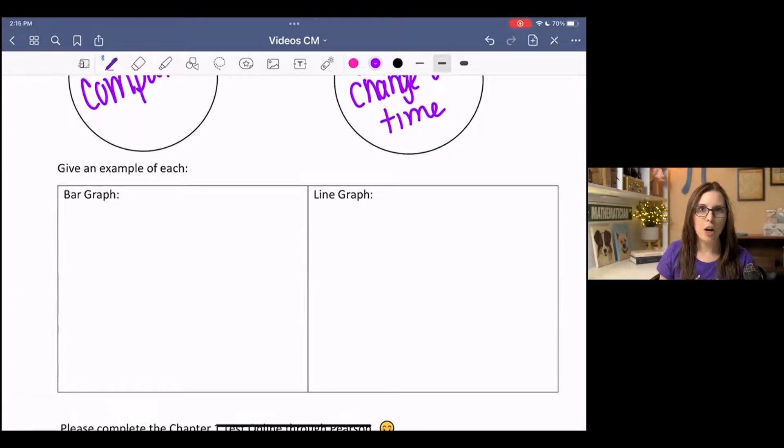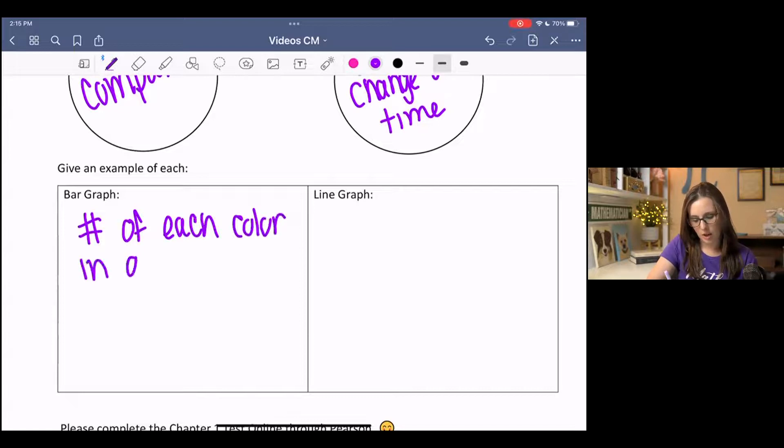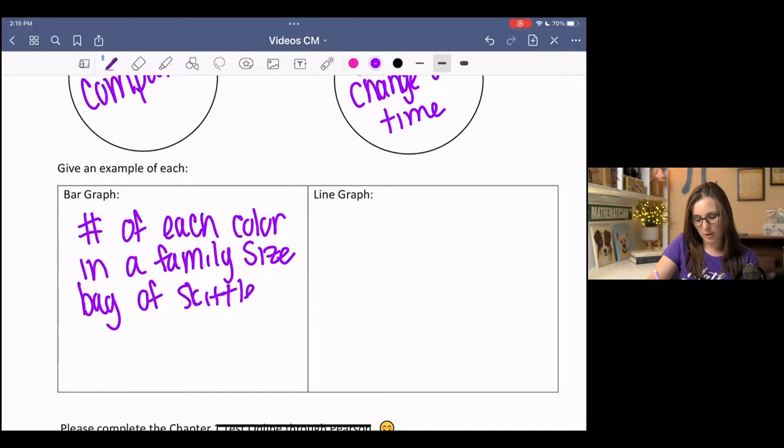there's lots of uses for a bar graph. One you could do is number of each color in a family size bag of Skittles. You would have all your colors listed out on the axis, and then your bars would go up to the frequency at which each color occurred. So that's a bar graph.